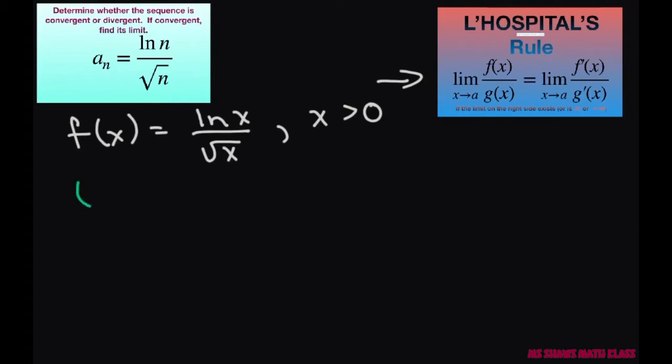So the limit as x approaches infinity of f of x is going to equal the limit as x approaches infinity of ln of x divided by square root of x.